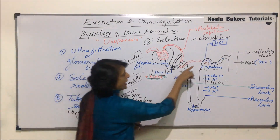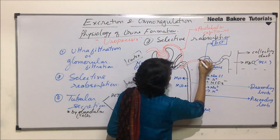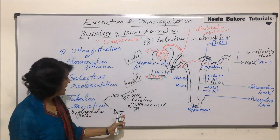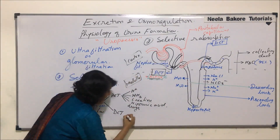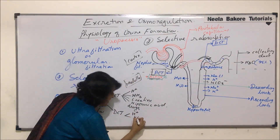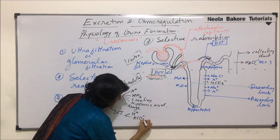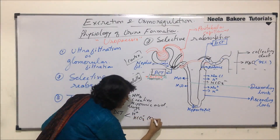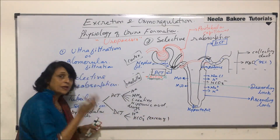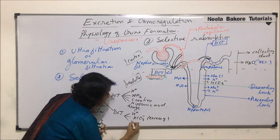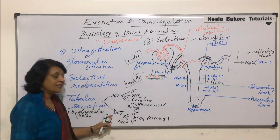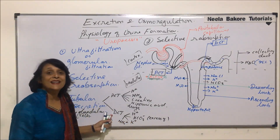DCT, similarly, absorbs certain things from the peritubular capillaries and pours them into the filtrate. DCT helps in removal of excess of hydrogen ions, excess of bicarbonate ions, excess of potassium ions, and excess of ammonium ions. These substances are removed by the glandular cells of DCT.